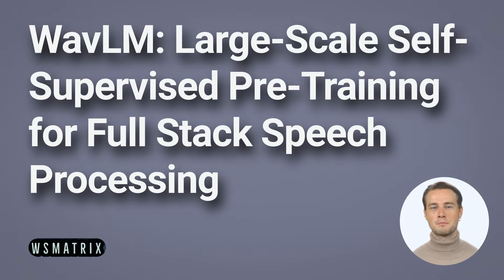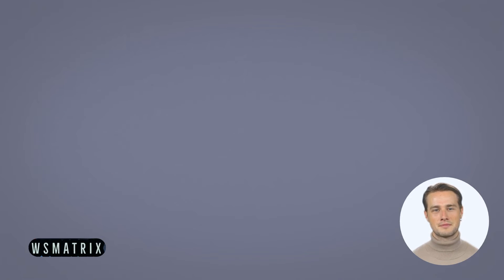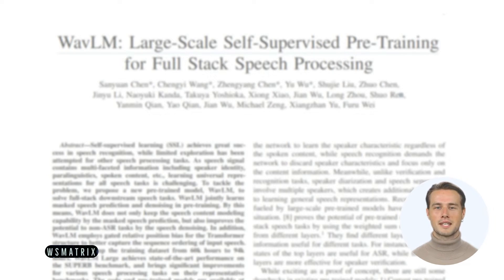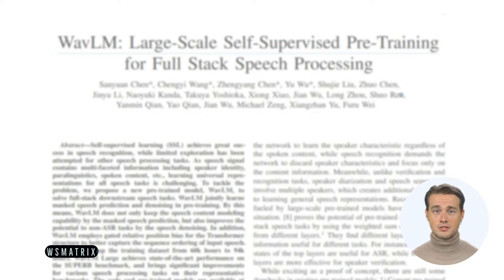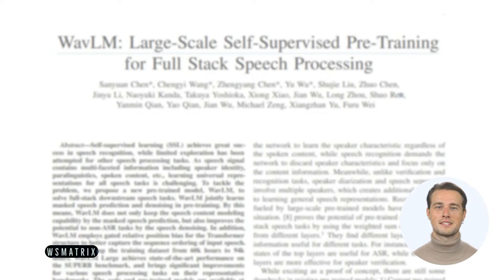One of the most recent and promising LLMs for speech processing is WAV-LM. WAV-LM is a large-scale self-supervised pre-training model for speech processing. It is trained on a massive dataset of 94K hours of audio, and it can be used for a variety of tasks, including speech recognition, natural language understanding, and machine translation. It's based on the transformer architecture, which is a neural network architecture that has been shown to be very effective for natural language processing tasks.